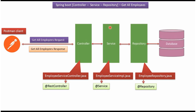Here you can see three different layers: controller layer, service layer, and repository layer. The Postman client sends a get-all-employees request to the controller, then the request goes to the service layer, then to the repository layer. The repository layer fetches all employee records from the employee table in the database, and finally the response goes back to the client.